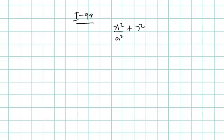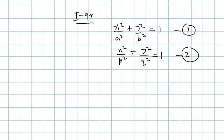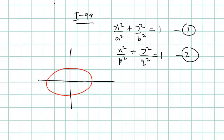In this question, two ellipses are given: x²/a² + y²/b² = 1 and x²/p² + y²/q² = 1. Let's call these the first and second ellipse. We can draw them — their centers coincide, but we can't say they are concentric because they are intersecting each other.